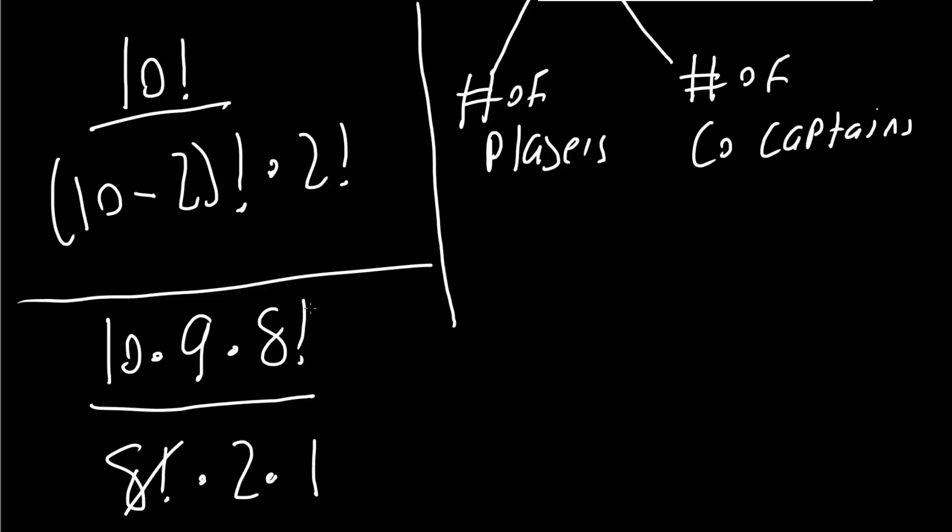So 8 factorial cancels. 10 times 9 is 90. 90 divided by 2 is 45 ways, or 45 possible combinations to select the two co-captains. And that's all we need to do for this problem.